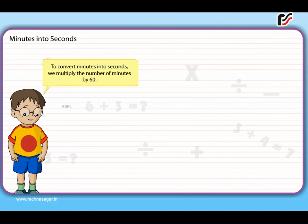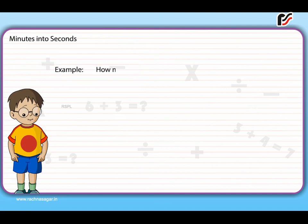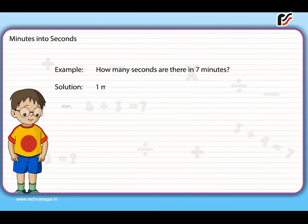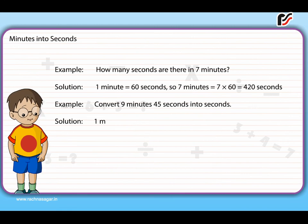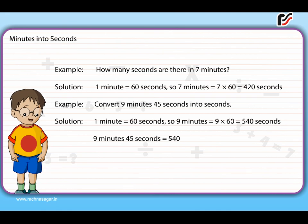Minutes into seconds: To convert minutes into seconds, we multiply the number of minutes by 60. Example 1: How many seconds are there in 7 minutes? Solution: 1 minute = 60 seconds, so 7 minutes = 7 × 60 = 420 seconds. Example 2: Convert 9 minutes 45 seconds into seconds. Solution: 9 minutes = 9 × 60 = 540 seconds, and 9 minutes 45 seconds = 540 + 45 = 585 seconds.